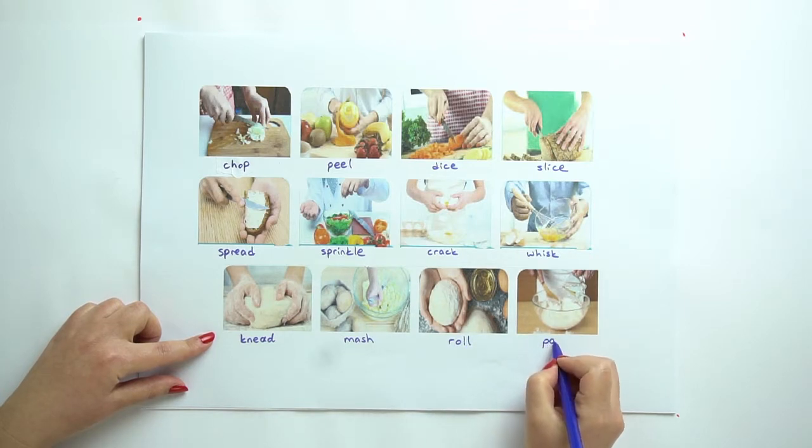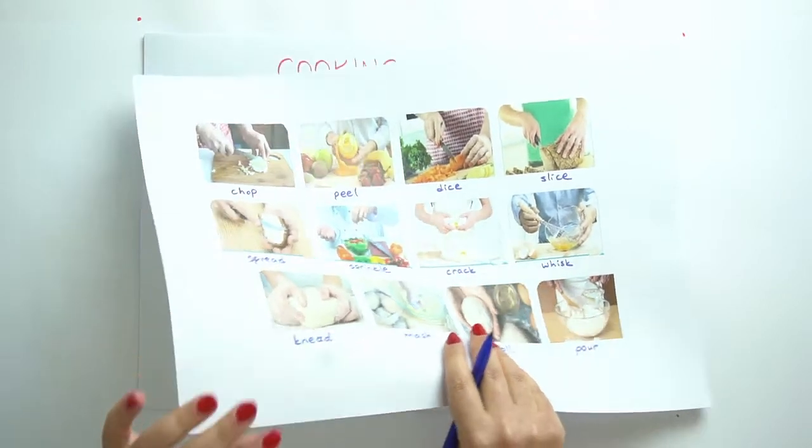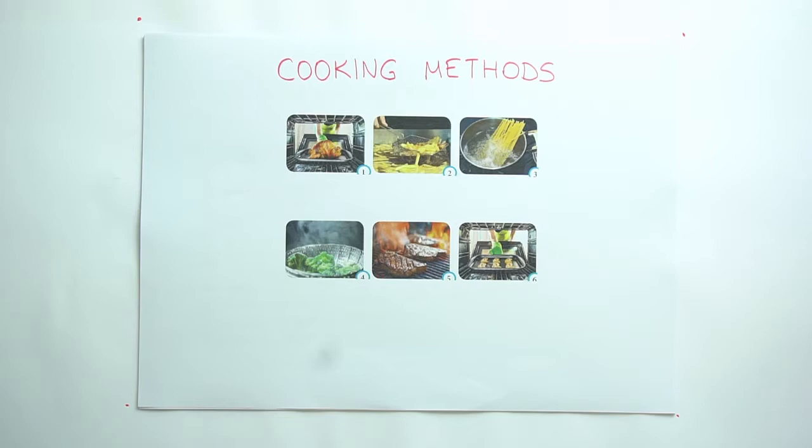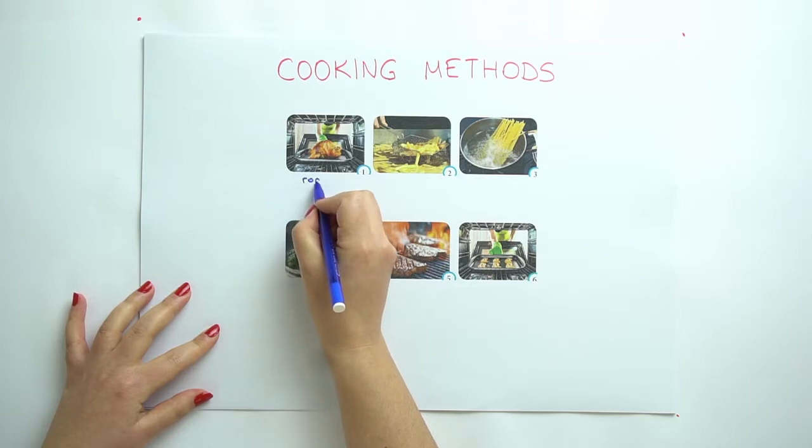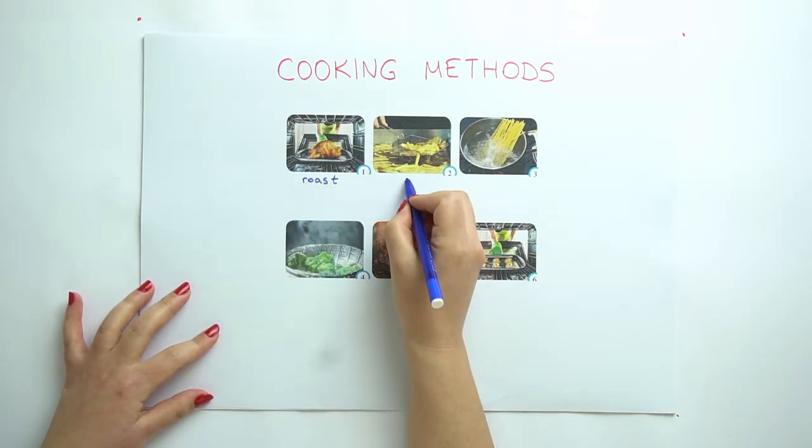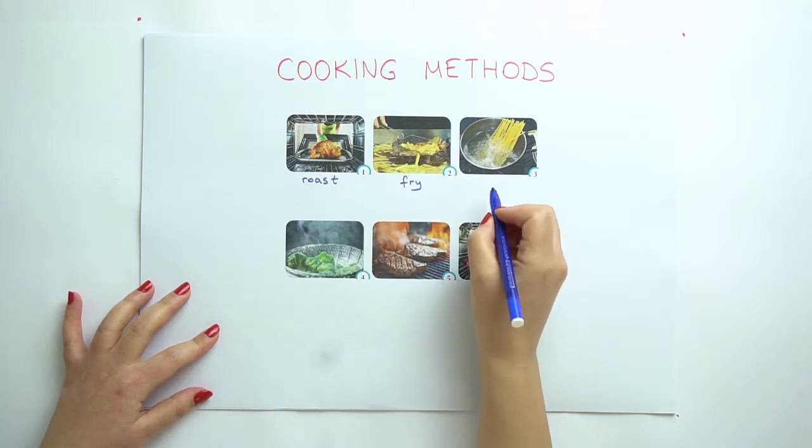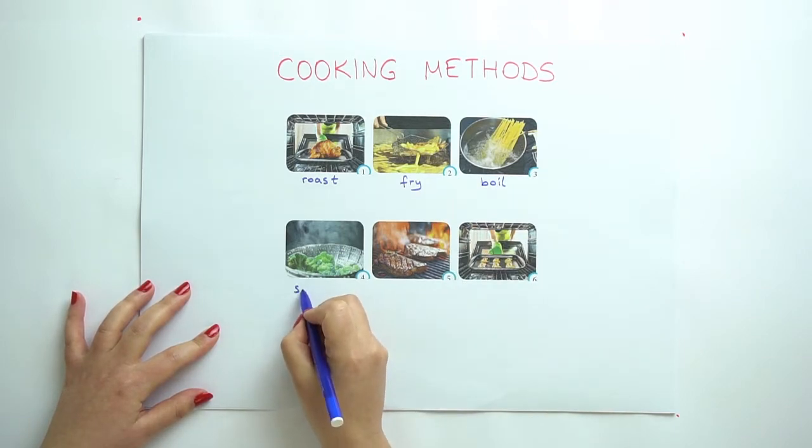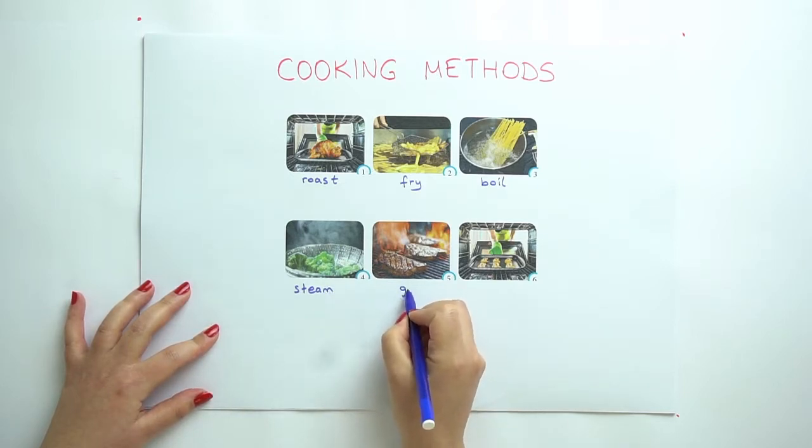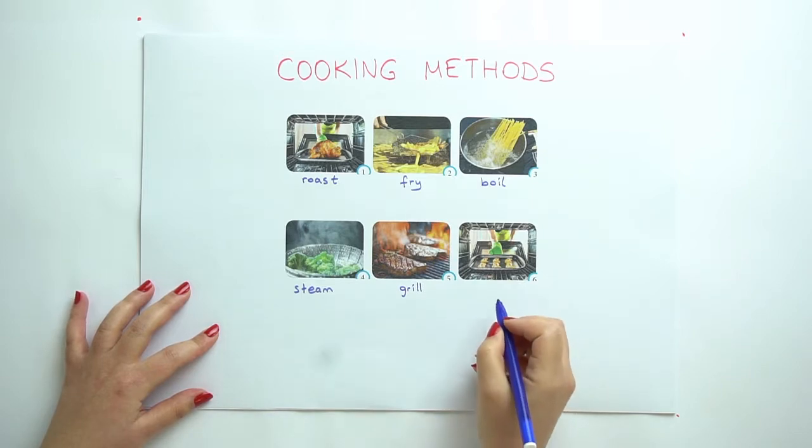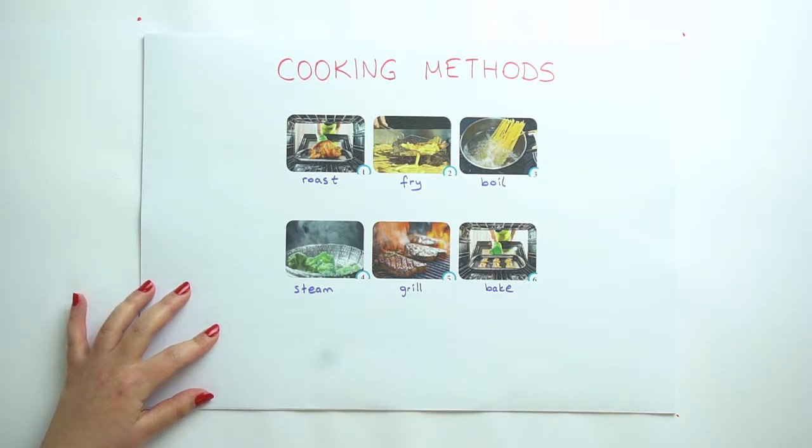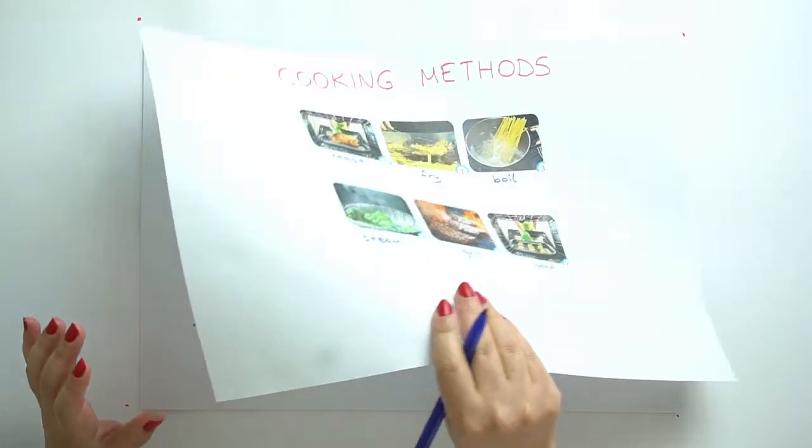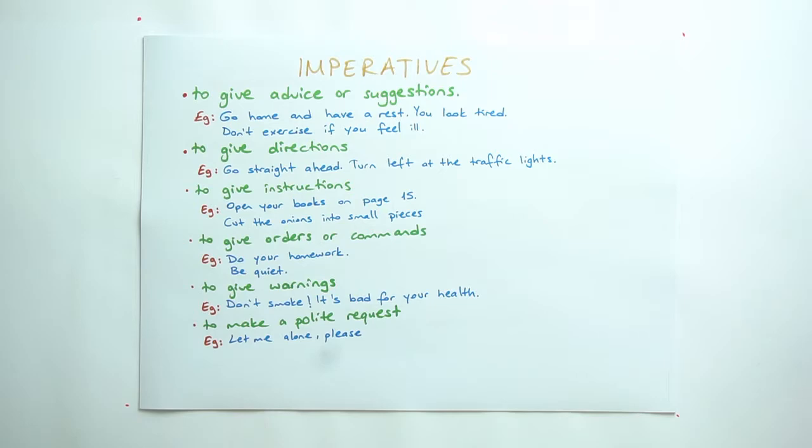The next one is knead meat or dough, and this one is mash, mash the potatoes. This is roll, and the last one is pour. Now here are some cooking methods. The first one is roast, this is fry, number three is boil, four is steam, five is grill, and the last one is bake.